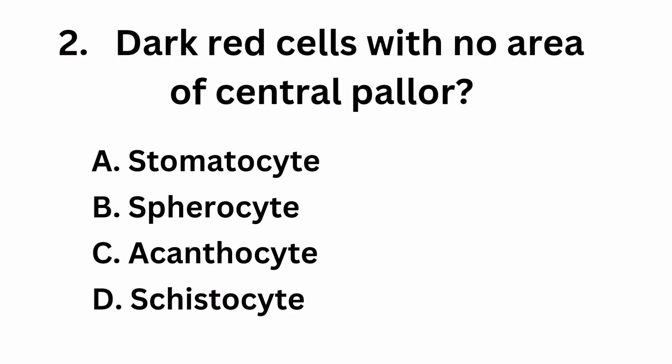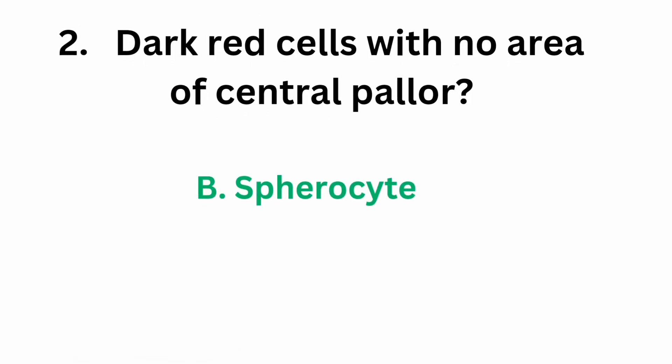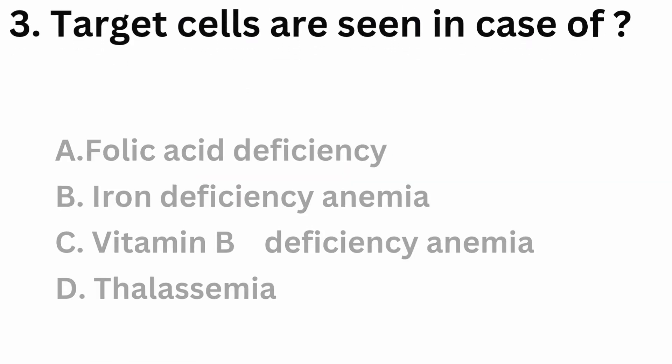Question number 2: dark red cells with no area of central pallor. Option A, stomatocyte. Option B, spherocyte. Option C, acanthocyte. Option D, schistocyte. The correct answer is option B, spherocyte. Spherocyte has no central pallor.